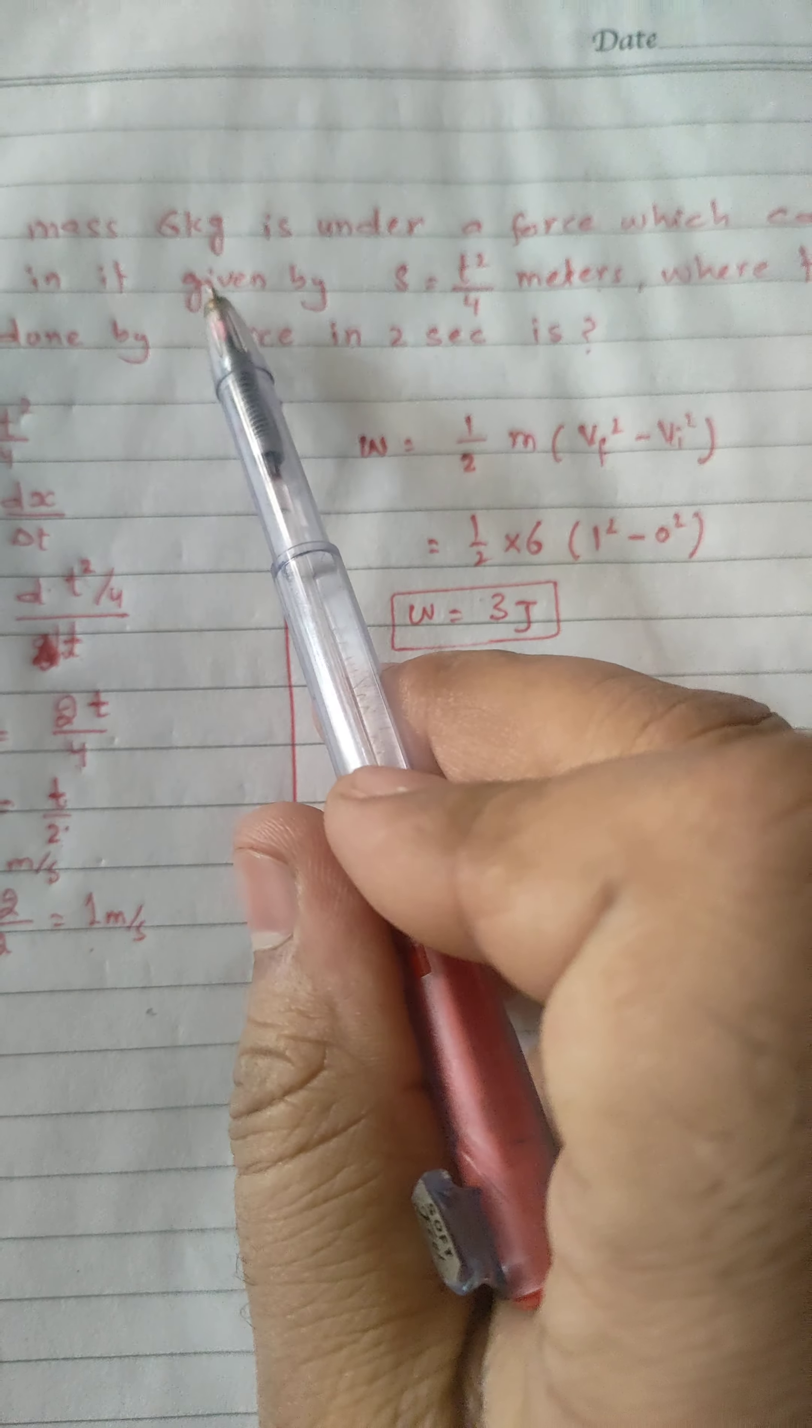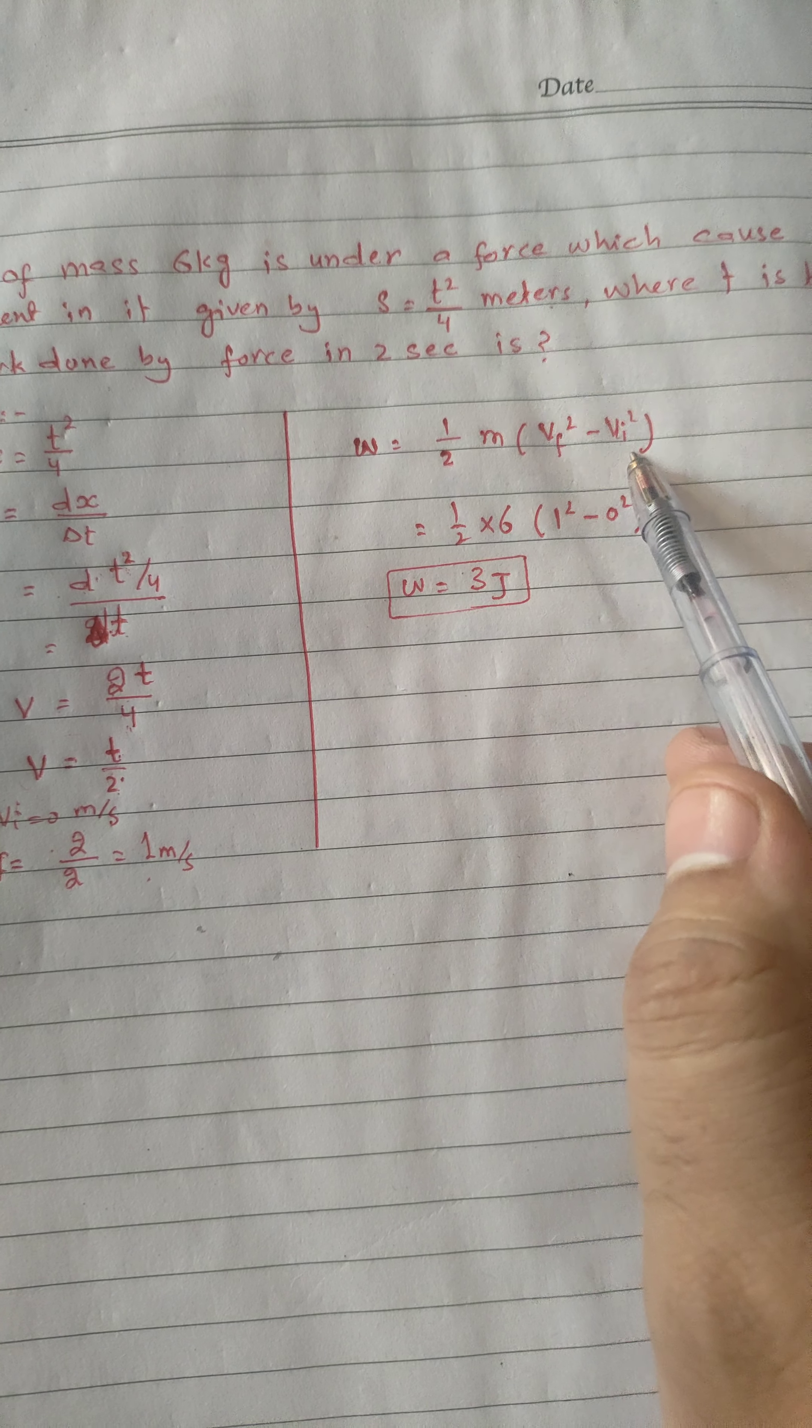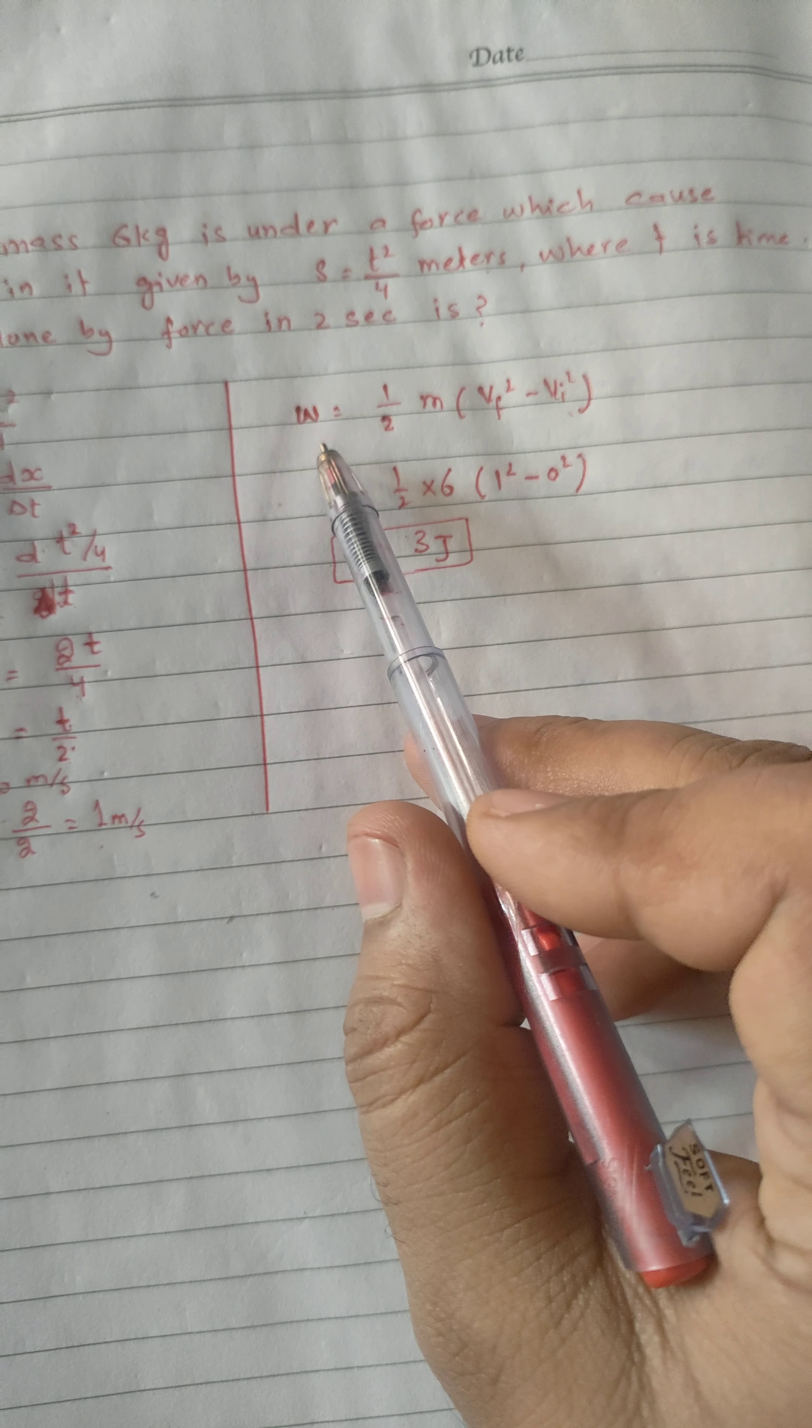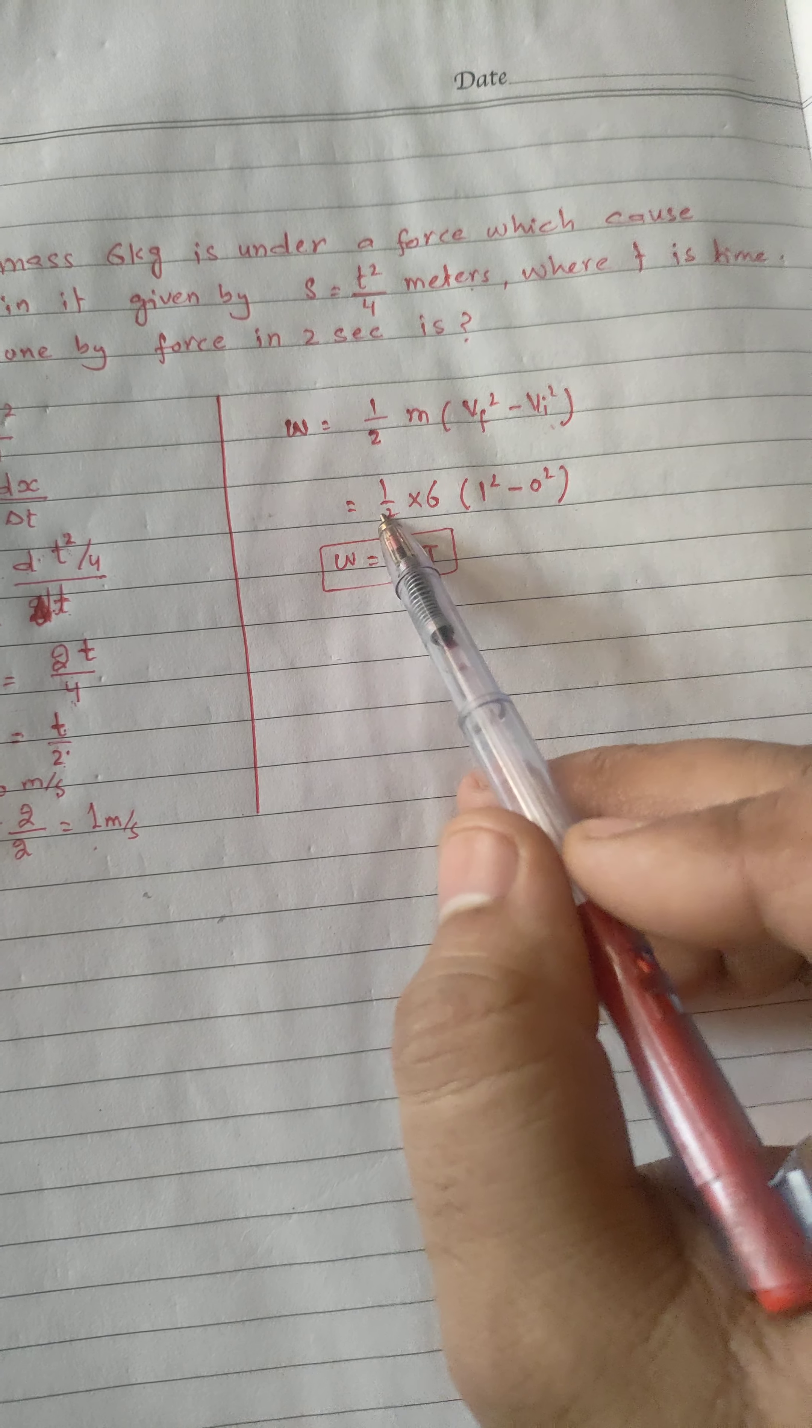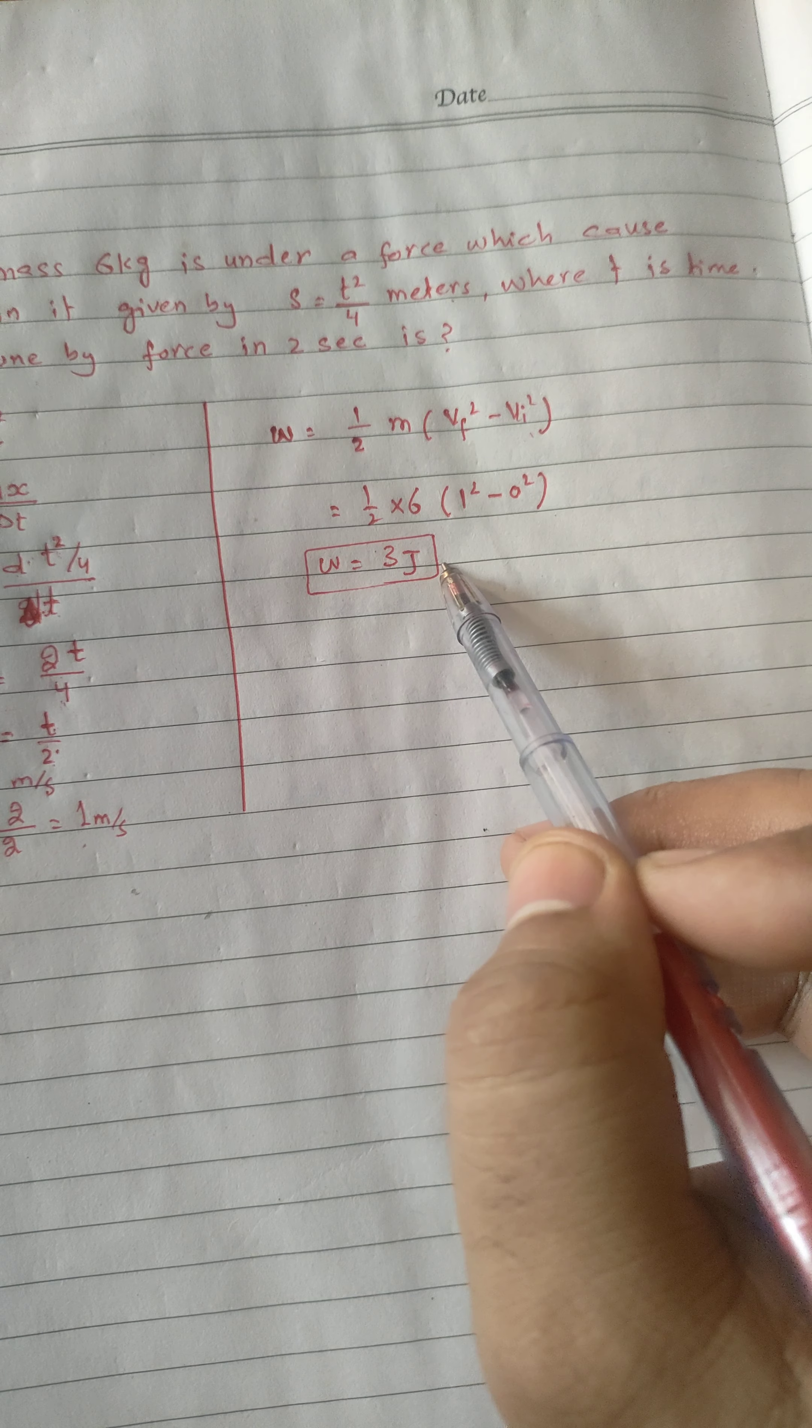Now we have to know work done using the work-energy theorem: work done = 1/2 m(v_f² - v_i²). So 1/2 m(v_f² - v_i²), where m value is 6, v_f value is 1, v_i value is 0. This factor cancels.